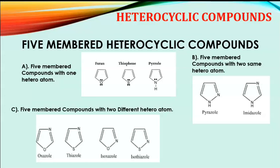Five-member heterocyclic compounds are defined as five-member rings which contain heterocyclic compounds. This is further classified into three classes. The first class is five-member compounds with one heteroatom. For example, furan contains a five-member ring structure with only one heteroatom — oxygen. Other examples are thiophane and pyrrole, which contain sulfur and nitrogen respectively as a single heteroatom.